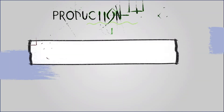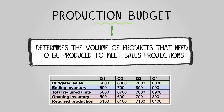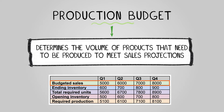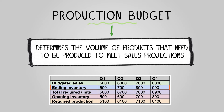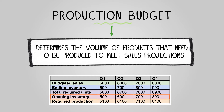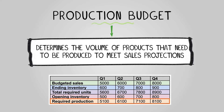The production budget is about determining the volume of products that need to be produced to meet sales projections. Key components include budgeted sales from the revenue budget, ending inventory — the projected stock level at the end of the period — total required units, which sums up budgeted sales and ending inventory, opening inventory at the start of the period, and required production, calculated by subtracting opening inventory from total required units.